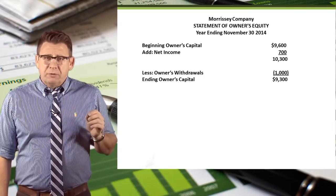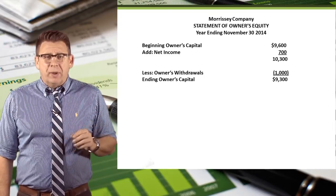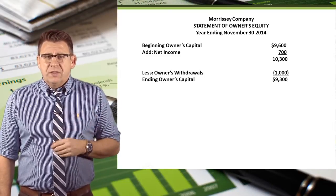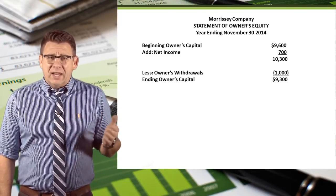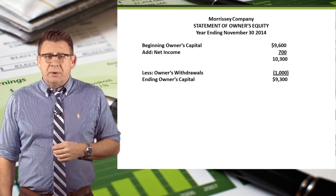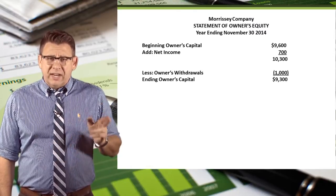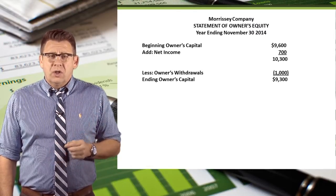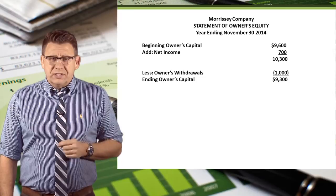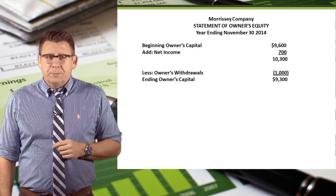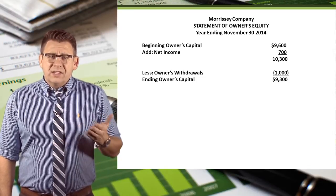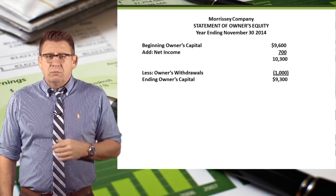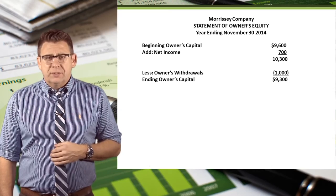Owner's capital from the adjusted trial balance is listed first. Then we add net income to increase owner's capital. Finally, we subtract owner's withdrawal, which decreases owner's capital. This gives us the ending owner's capital balance that will go on the balance sheet.